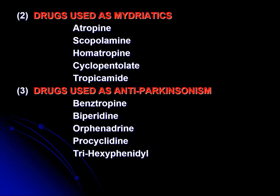The third group are those drugs used for the treatment of Parkinsonism. Drugs included in this group are benztropine, which was a very old, time-tested drug used in the treatment of Parkinsonism — a neurological disease related to the CNS where there are tremors, rigidity, and excessive salivation. To relieve rigidity and tremors, drugs like benztropine, atropine, biperiden, orphenadrine, and procyclidine are used.